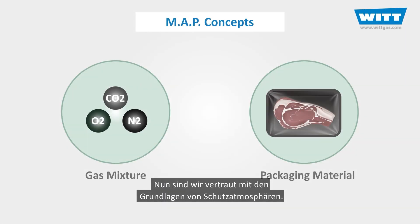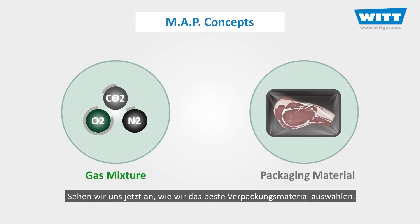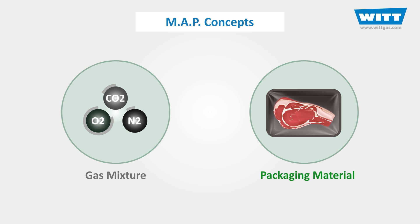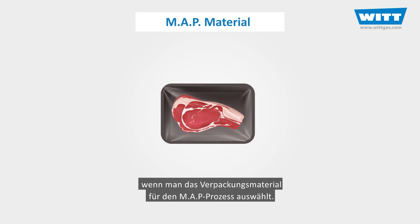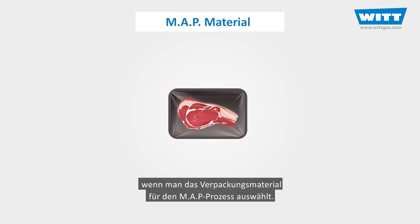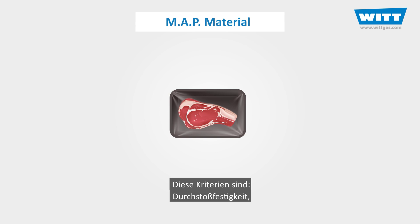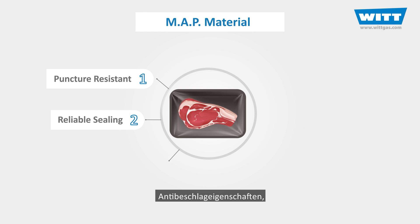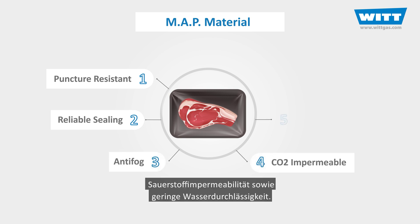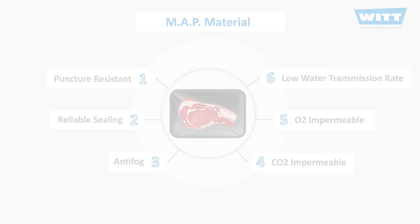Now that we've got familiar with the gas mixture concepts, let's see how we select the best packaging material, as it's essential to maintain the quality and safety of MAP foods. There are six main characteristics to consider when selecting packaging material for modified atmosphere packed foods: resistance to puncture, sealing reliability, anti-fogging properties, carbon dioxide impermeability, oxygen impermeability, and low water transmission rate.